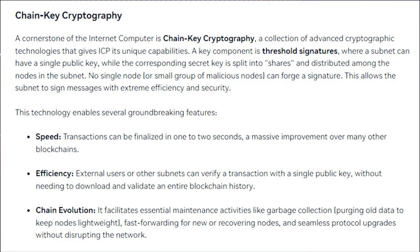Let's move into chain key cryptography. This is going to make a difference in how people feel secure with ICP — it's going to make even governments feel more secure because of how chain key operates. Chain key is a cornerstone of the Internet Computer: a collection of advanced cryptographic technologies that gives ICP its unique capabilities. A key component is threshold signatures, where a subnet has a single public key while the corresponding secret key is split into shares and distributed among the nodes in the subnet, so a single node or small group of malicious nodes cannot forge a signature.